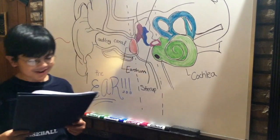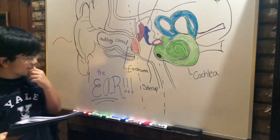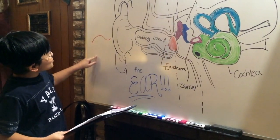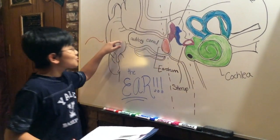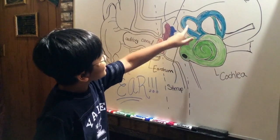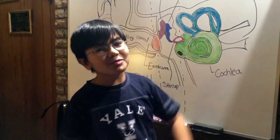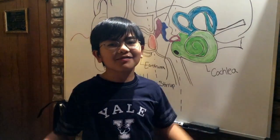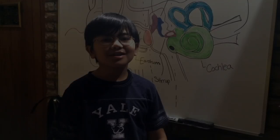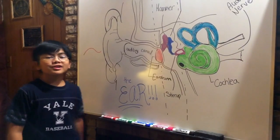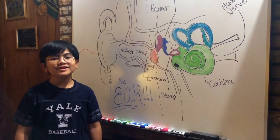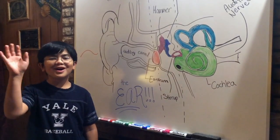I did not understand that, but sound goes into the ear. It goes to here. It goes to here. Then it goes into the brain where it does brain stuff. That's how you get sound. And that was the crash course on how your ear receives sound. Okay, bye!